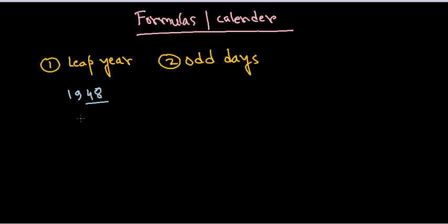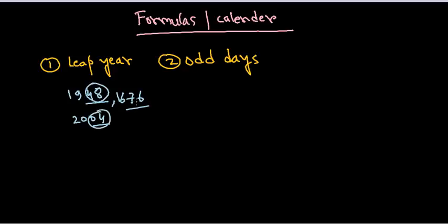Similarly, if you are talking about 2004, the last two digits 04 are divisible by 4, so obviously it's a leap year. Let's say 1676 — the last two digits 76 are divisible by 4, so it is also a leap year. In all of these cases you take the last two digits and if you divide by 4 with no remainder, it's a leap year.